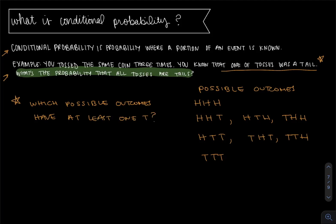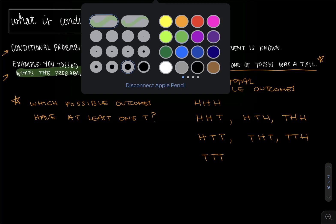So out of all of the possible outcomes we have for this scenario of flipping the same coin three times, which of them have at least one tail?